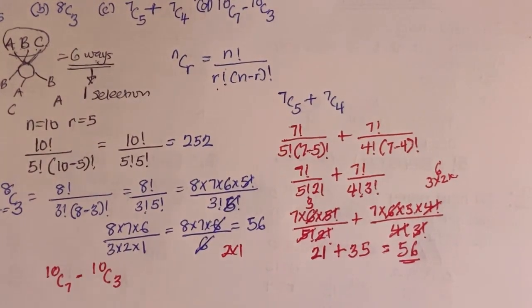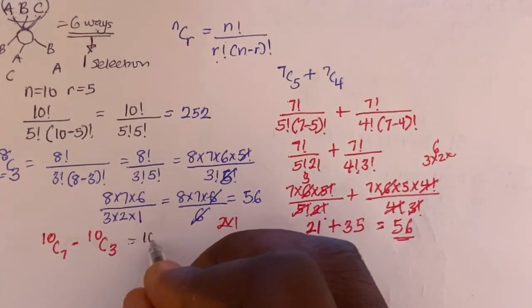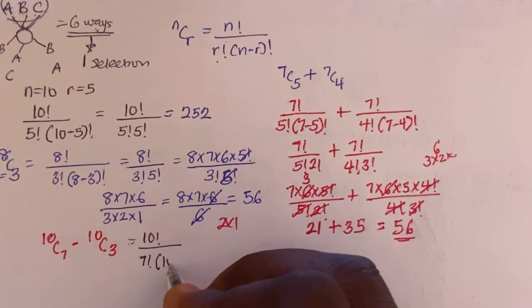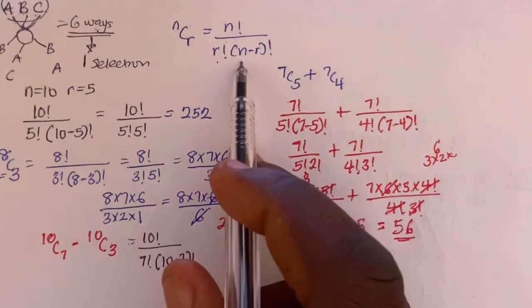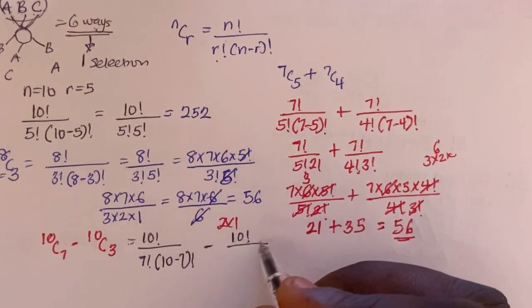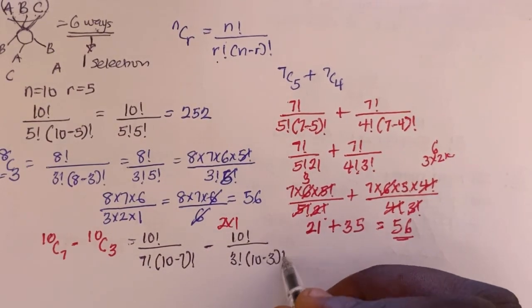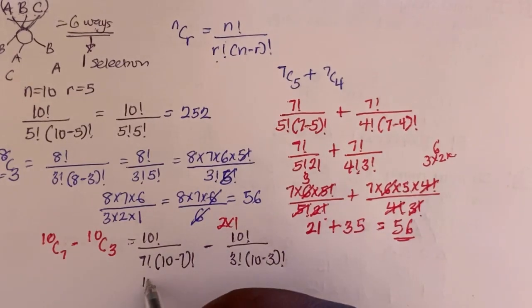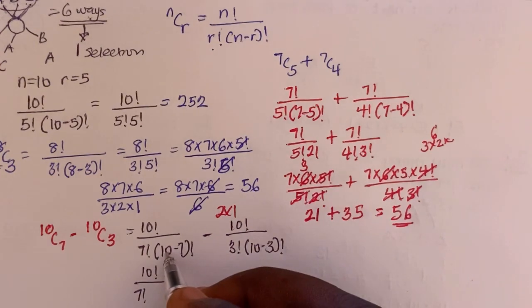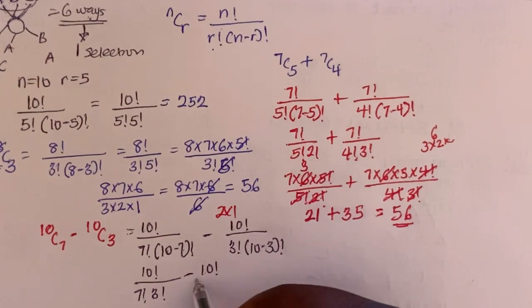You can go ahead and pause this video and solve the question yourself. Using the formula: 10C7 = 10! divided by (7! × (10 − 7)!) = 10! divided by (7! × 3!). And 10C3 = 10! divided by (3! × (10 − 3)!) = 10! divided by (3! × 7!).